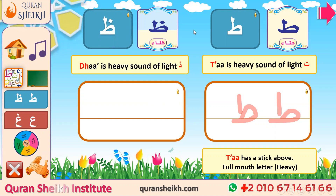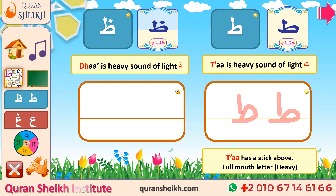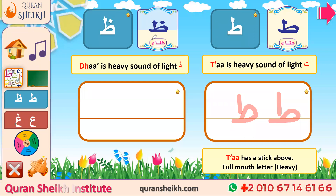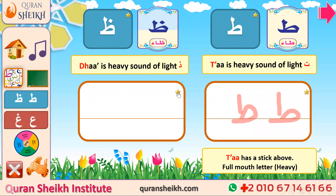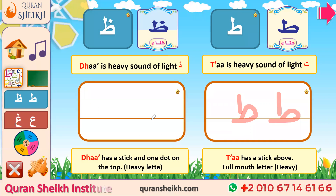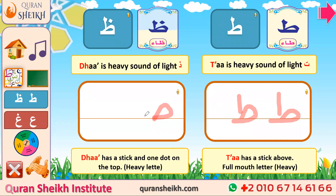The second letter is Va (ظ). Va is a heavy sound of Thal. You should keep your tongue out between your teeth while you pronounce Thal. So Va letter is the heavy sound of Thal. How can you write down this letter? It is exactly like Ta but it has one dot beside the stick. So Va letter is exactly like Ta letter but it has one dot on the top.